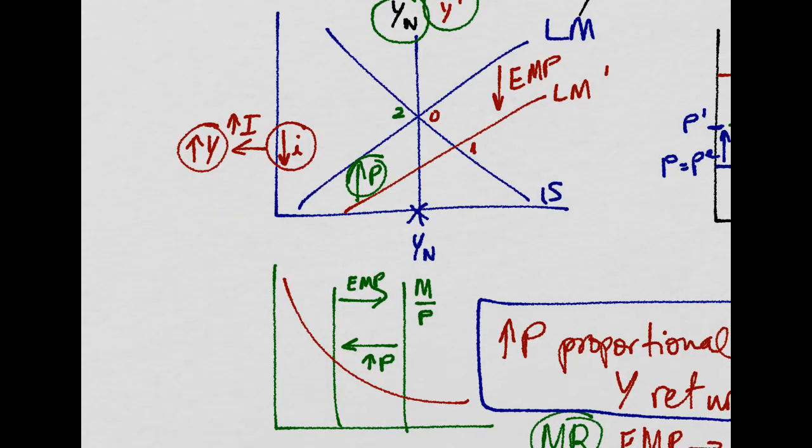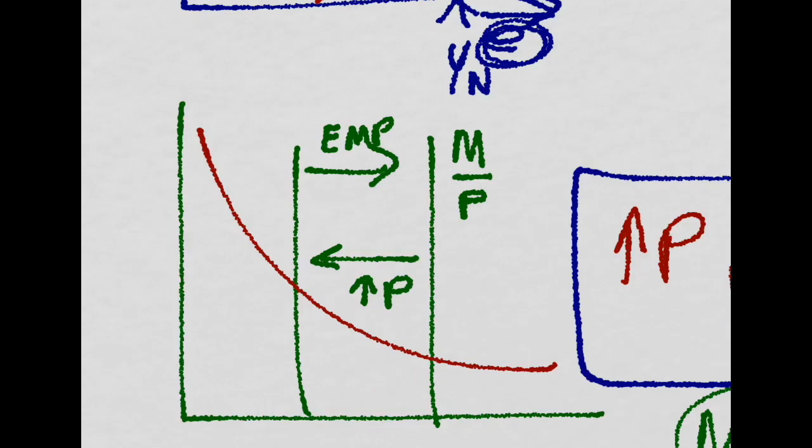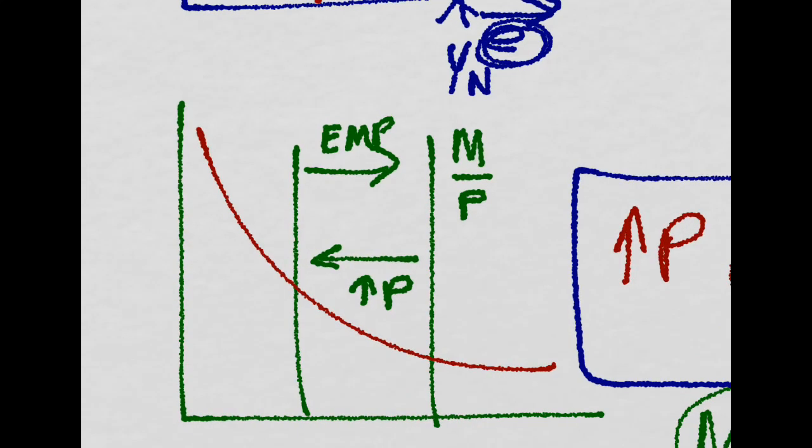So let's see what happens in detail. We first have this expansionary shock in the money stock in the economy, which is basically a shift down of the LM, bringing up the output in the economy, because our interest rate is going down. That is, investment goes up and output goes up.